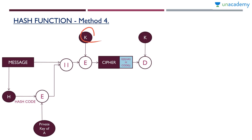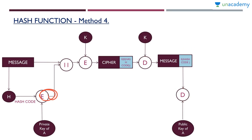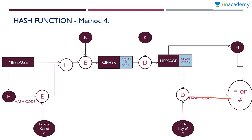At the receiver side, he'll apply the same key on the decryption algorithm with the encrypted appended message and get message plus encrypted hash code as output. Then he'll apply the encrypted hash code plus the public key of A to the decryption algorithm to get the original hash code. He'll take the message, apply it to the hash function, and compare the two hash codes. If equal, it's authentic. This method can be used if you need confidentiality along with authentication, since the whole message is encrypted — if a third party intercepts, they'll only get the encrypted message.